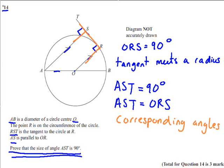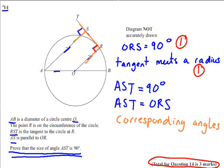And that will be enough to get you full marks. So question 14 is worth a total of three marks. You get one mark for stating ORS is 90 degrees. You get one mark for stating a reason, in this case a tangent meeting a radius. And you get your final mark for stating AST is equal to ORS or AST is also 90 degrees, along with the reason of corresponding angles.